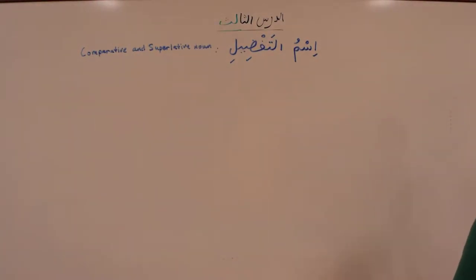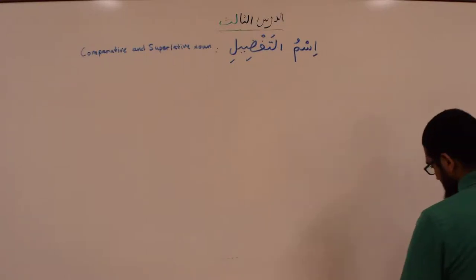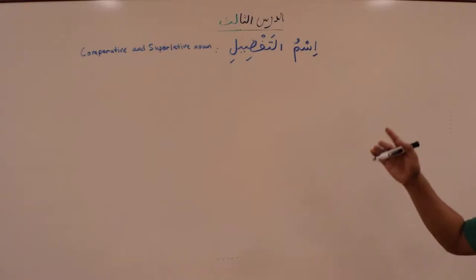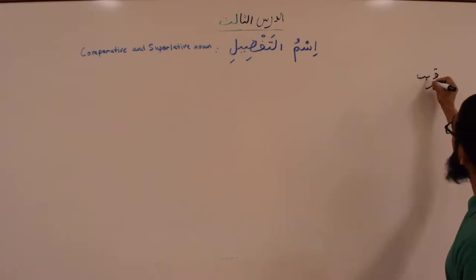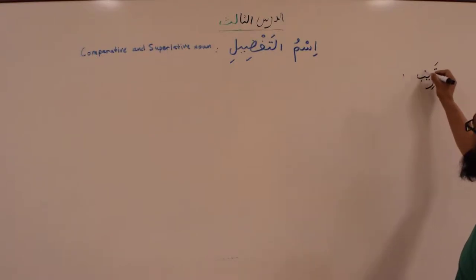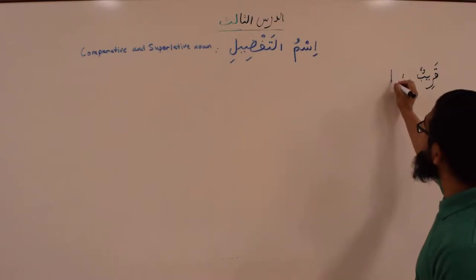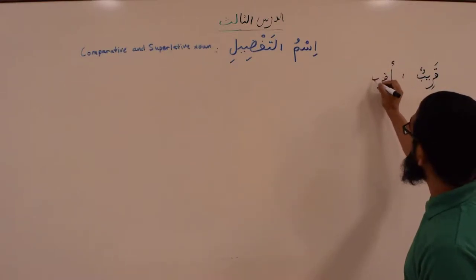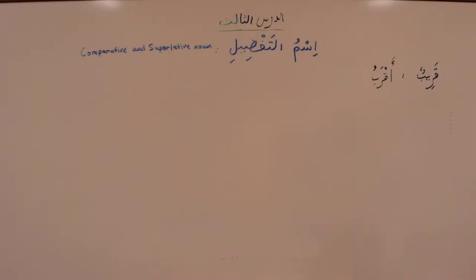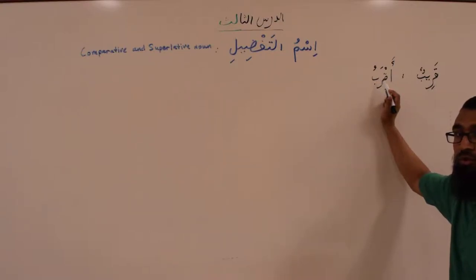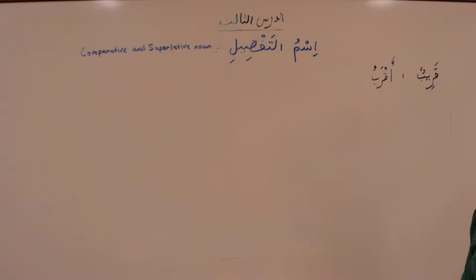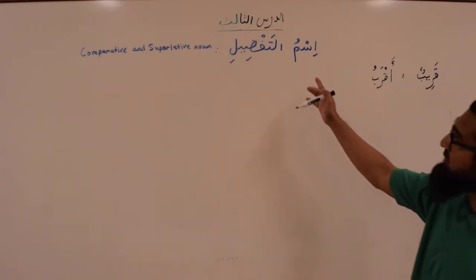Let's see how you create the ismu tafdeel. We're going to put a bunch of words on the board — words that I already know — and then we'll formulate the ismu tafdeel. So the word qareeb, qareebun, which means 'close' — the ismu tafdeel of it is aqrabu. It ends with one dhamma, so it looks like it's mamnu' min al-sarf, and that is correct — the ismu tafdeel is mamnu'un min al-sarf.